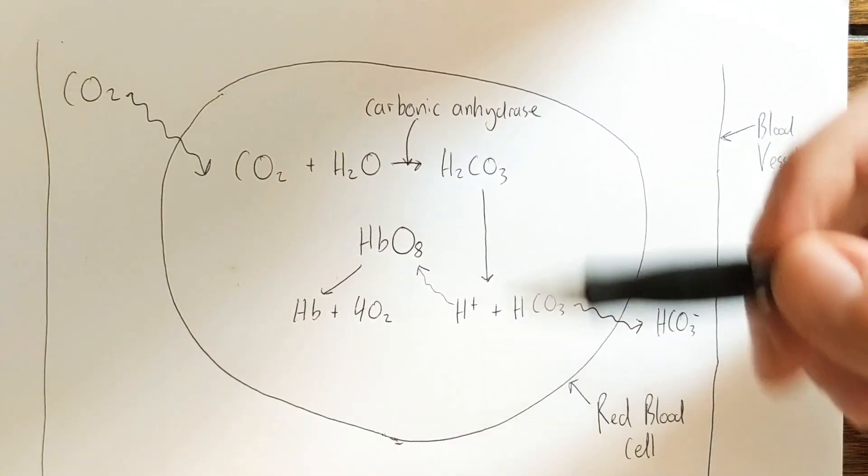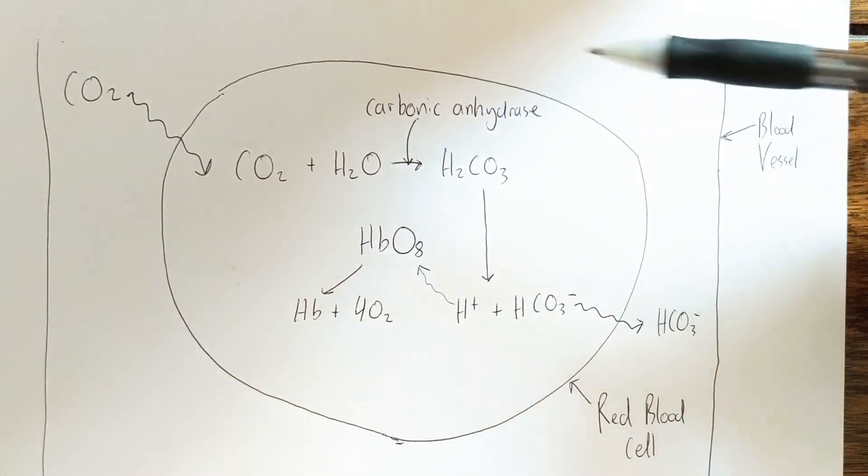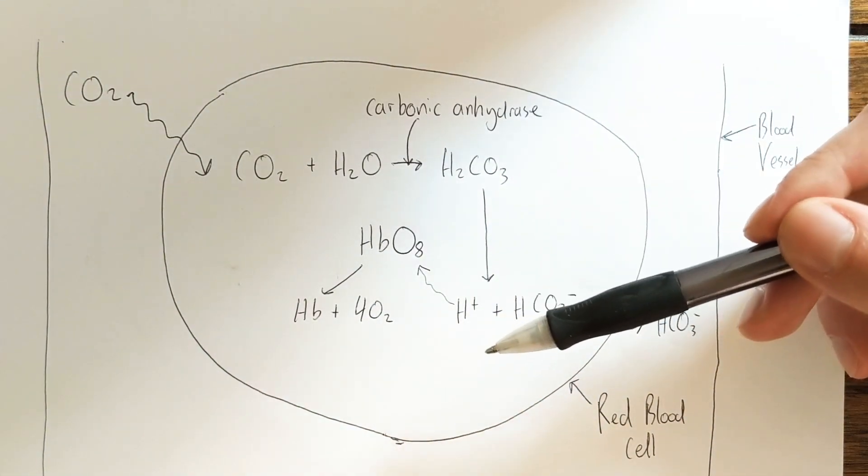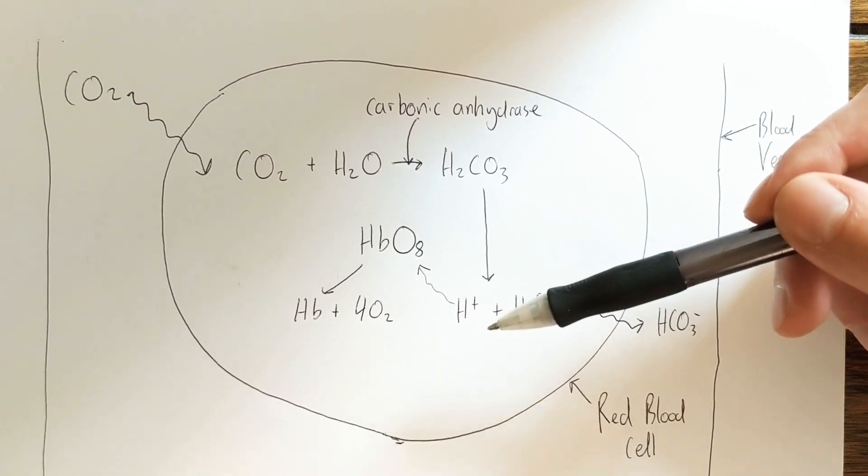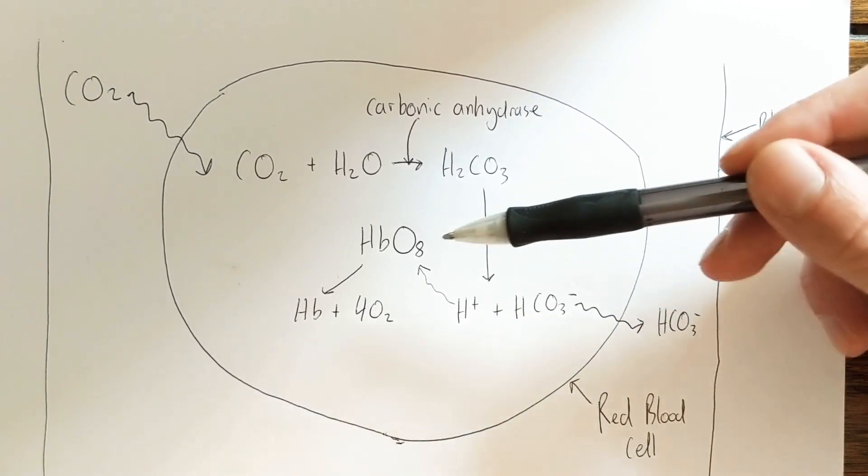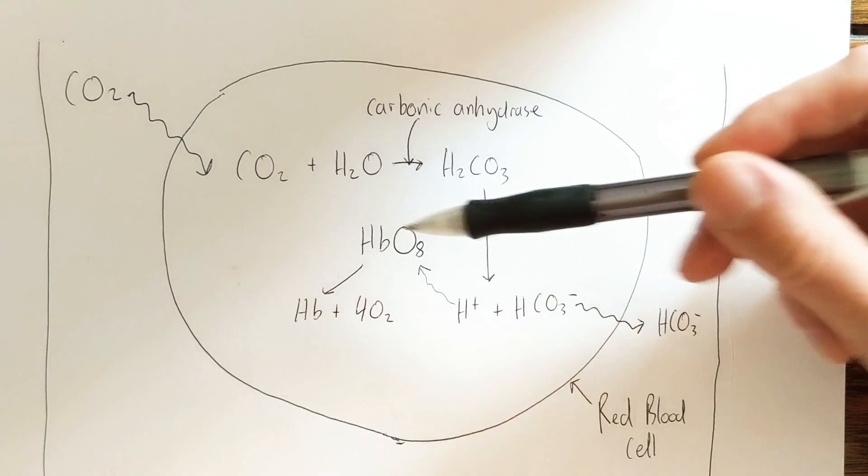So this links to the Bohr shift because the presence of carbon dioxide leads to an increase in H+ ions, which decreases the pH of the red blood cell and then causes the hemoglobin to more readily release the oxygen.